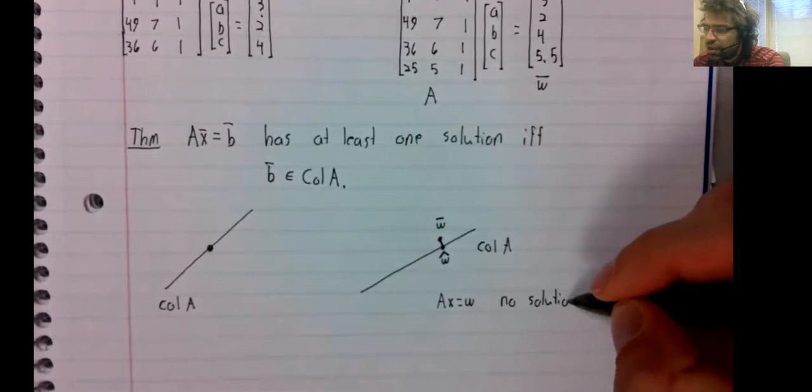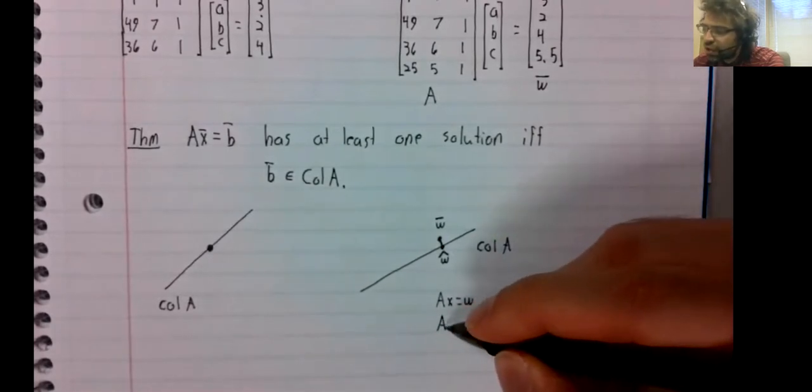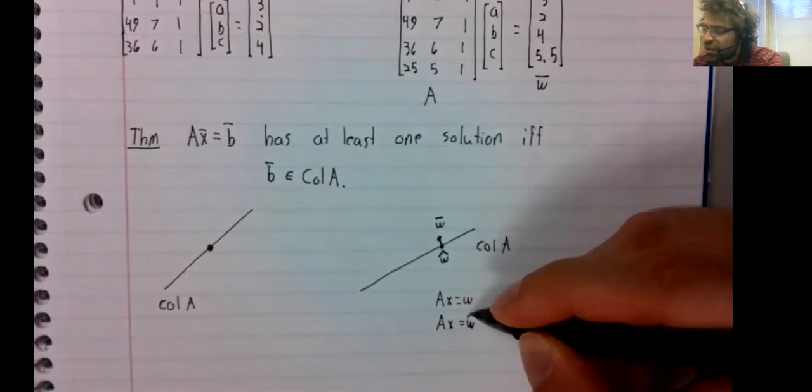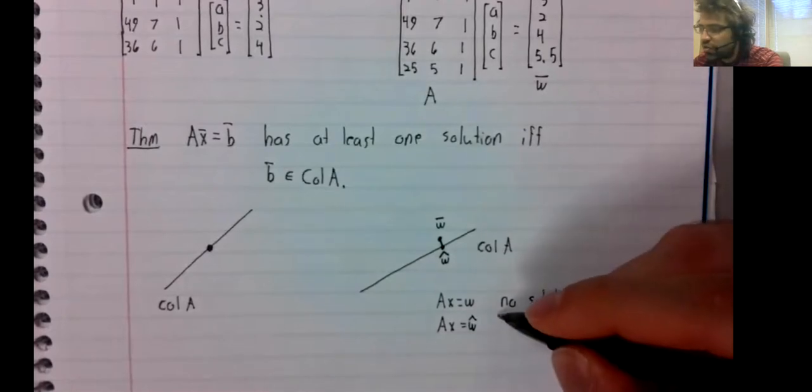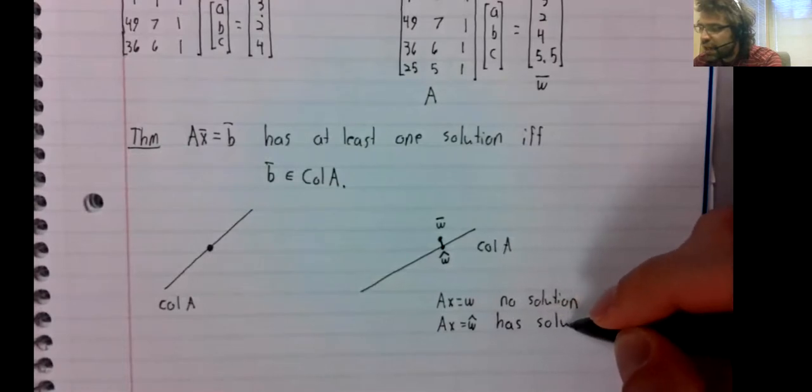And because the orthogonal projection is in the column space, this does have a solution.